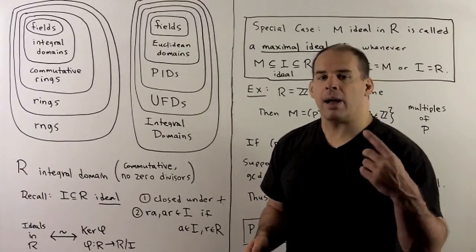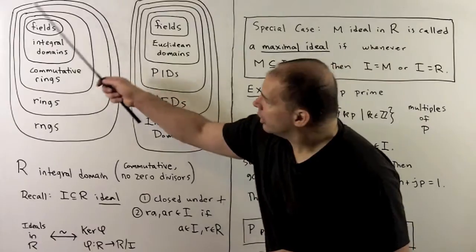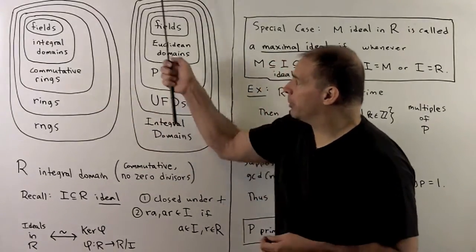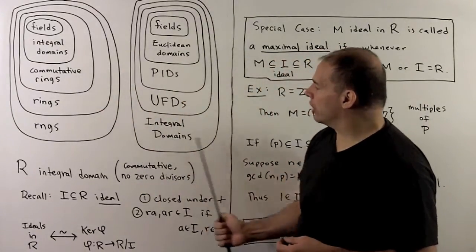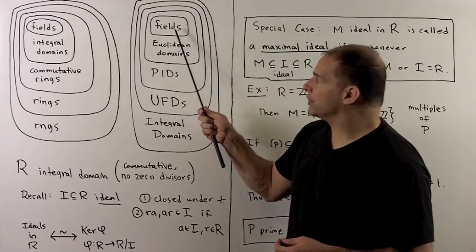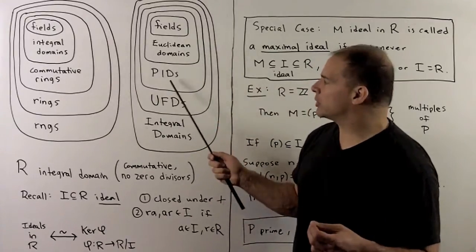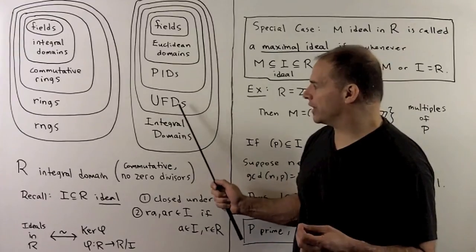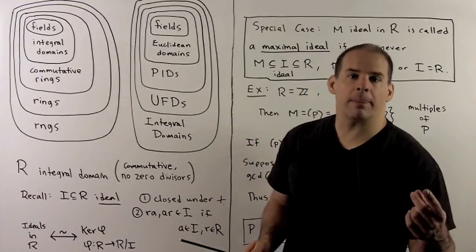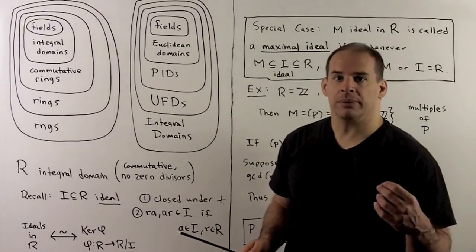From here on out, we're only going to work with integral domains. The big picture is going to look like this: all the way on the inside, we have fields. When we move out, we get Euclidean domains, principal ideal domains, and unique factorization domains. For this part, we focus on the basic properties of fields.